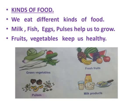Kinds of food — we eat different kinds of food. See children, in this picture, what food items are there? Milk, fish, eggs, pulses. These food items help us to grow. Milk, fish, eggs, and pulses help us to grow. Fruits and vegetables keep us healthy.